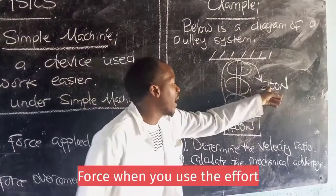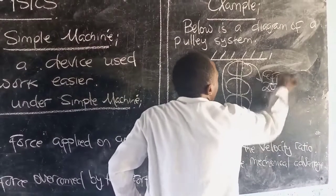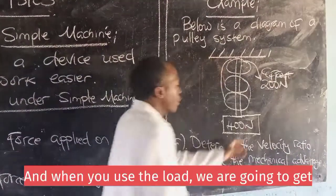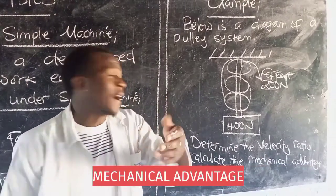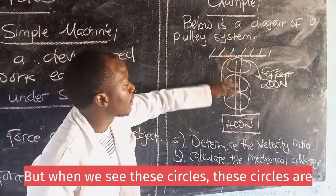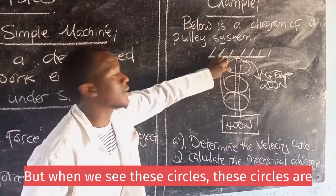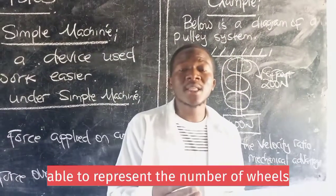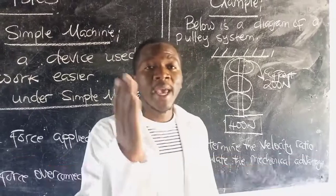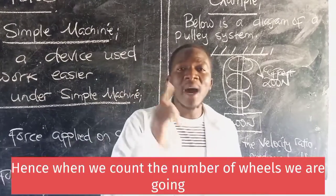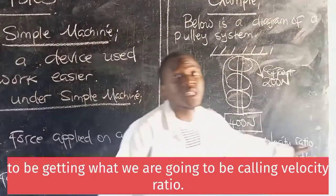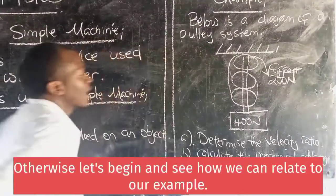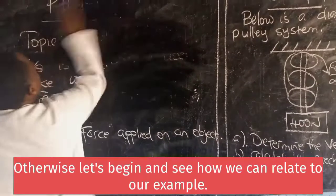When you use the effort and when you use the loads, we are going to get mechanical advantage. But when we see these circles, these circles are able to represent the number of wheels. Hence, when we count the number of wheels, we are going to be getting what we are going to be calling velocity ratio. Otherwise, let's begin and see how we can relate to our example.